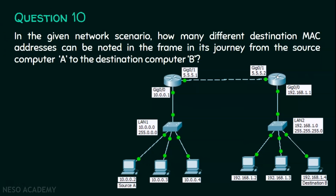When this frame is received by the second router, it sees the current interface MAC address as the destination and removes source and destination MAC addresses again, then uses the next interface MAC address as the source and the destination computer's MAC address as the destination — this is the third MAC address change. So the answer for question number ten is three: we can note three different destination MAC addresses in the frame's journey from source computer A to destination computer B.